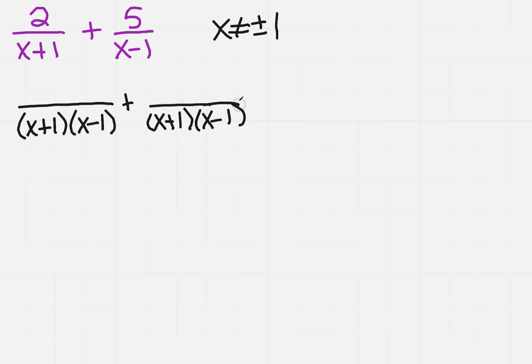Now, I've got the 2, so what's missing from the top one that I have in the bottom one? I don't have the x minus 1, so that's what I'm going to multiply by. I'm going to do the same thing for the second one, except this time I'm missing the x plus 1.